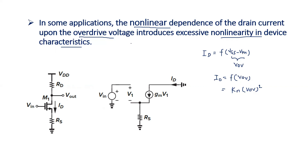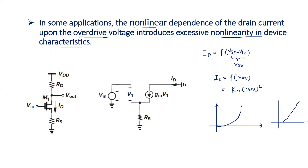To reduce this nonlinearity, we use a degeneration element at the source node, so that ID, which was increasing nonlinearly, is now much less nonlinear — it is now approximately linear. That is why we use source degeneration.